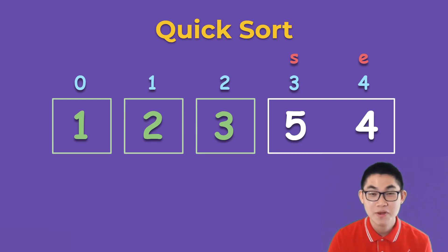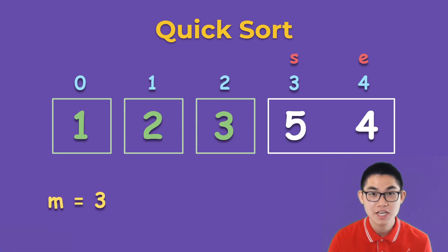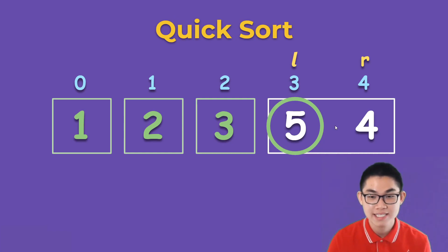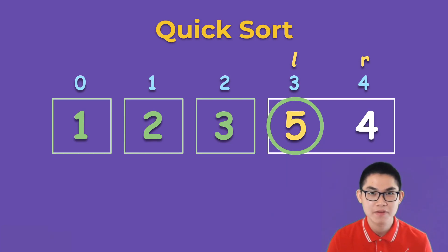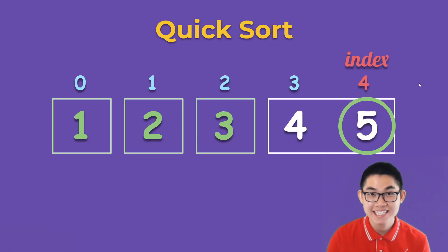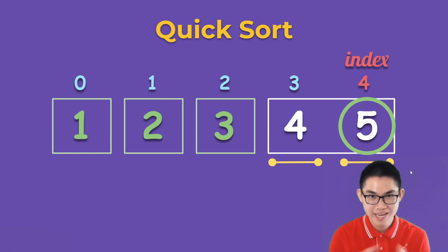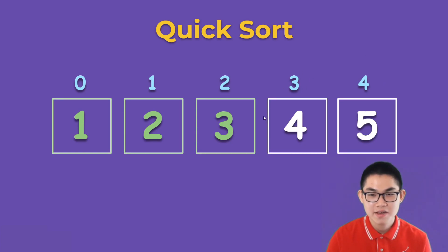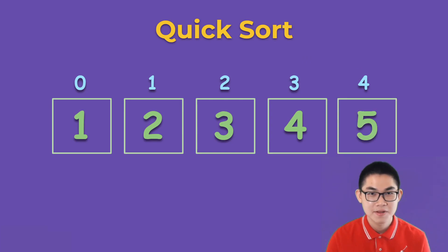Now our last box. We calculate the mid: 3 plus 4 is 7, divided by 2 is 3.5, rounded down gives 3. Mid is at index 3, and 5 will be our pivot. We begin the partition: L is at 5, which is equal to the pivot. R finds 4, which is smaller than the pivot. We swap 5 and 4, move L to the right and R to the left. We replace L with index and split the box. We put S and E on this box — 4 is in its correct place, and 5 is also in its correct place. The array is now sorted.